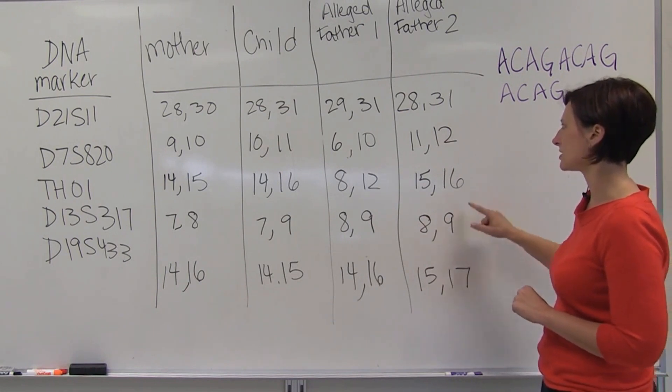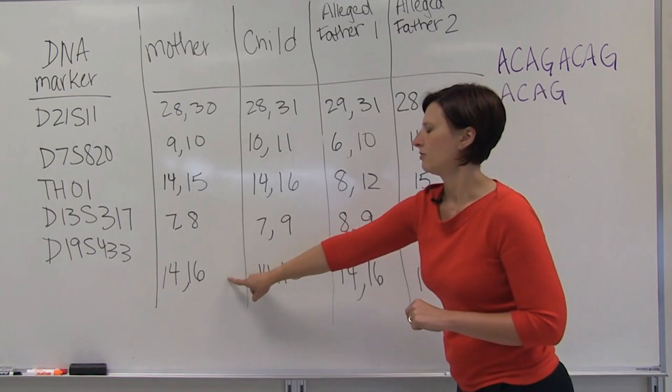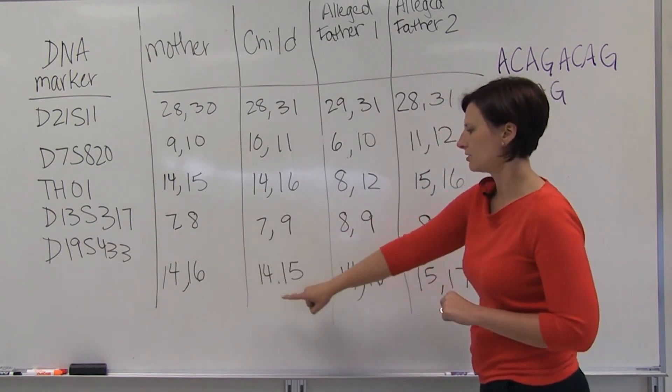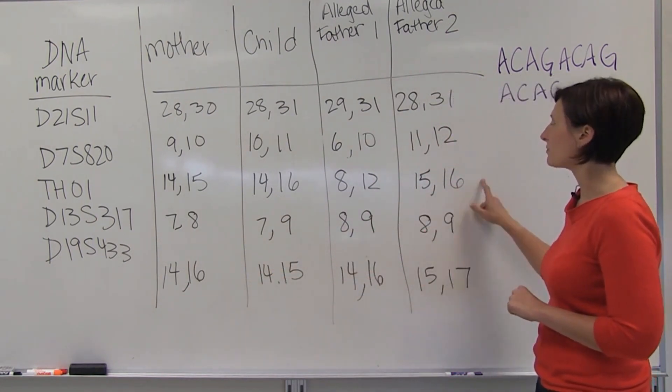14, 16 for the fifth locus, 14, 15 for the child, so 14 had to have come from the mother and 15 could have come from alleged father 2.